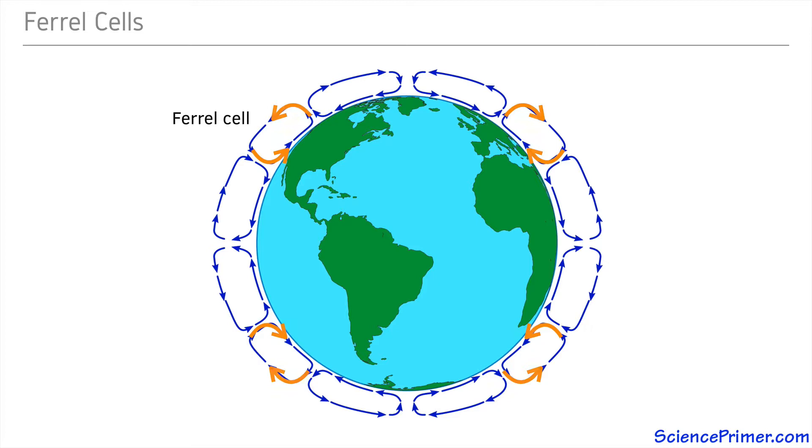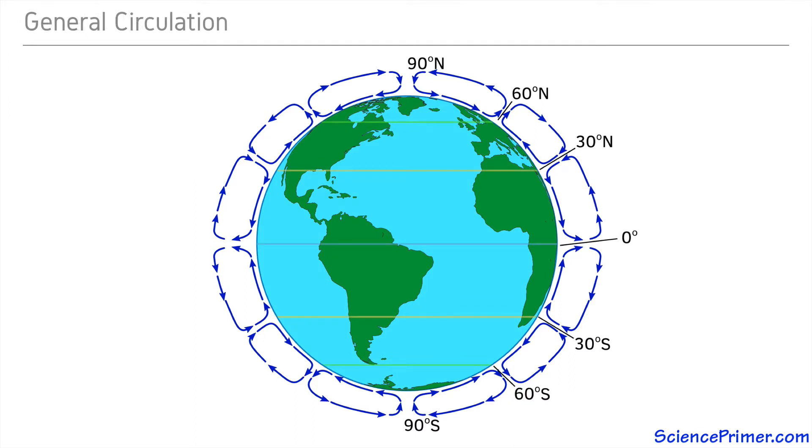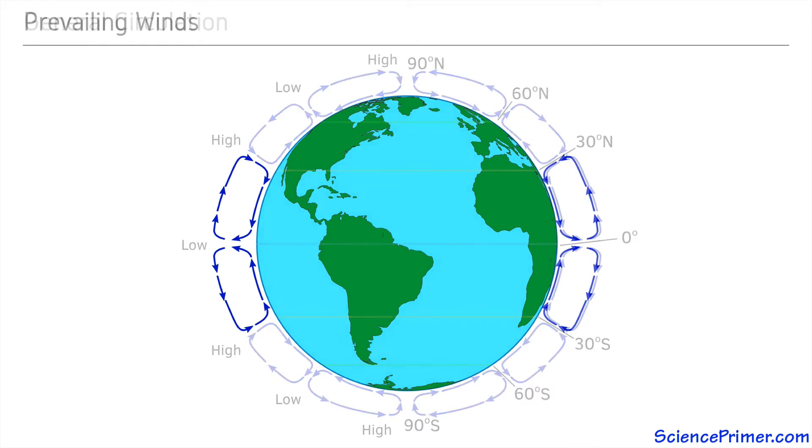This model of convection cycles diverted by Coriolis effect does a good job capturing the general characteristics of atmospheric circulation on Earth, by explaining the three convection cells on either side of the equator with alternating regions of high and low pressure between them. The direction of airflow along the ground within each cell creates the prevailing winds found at different latitudes.